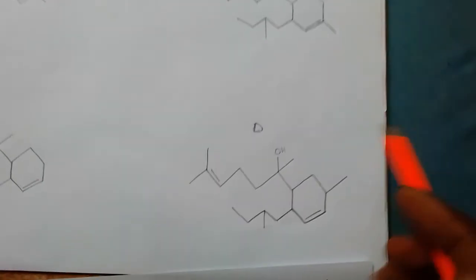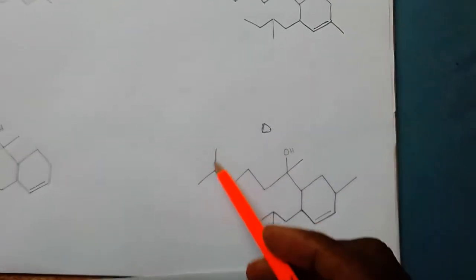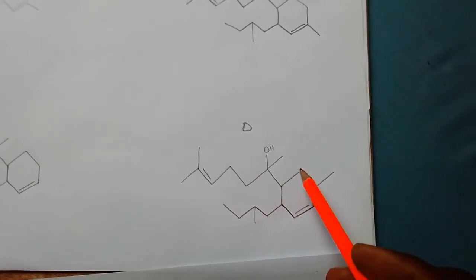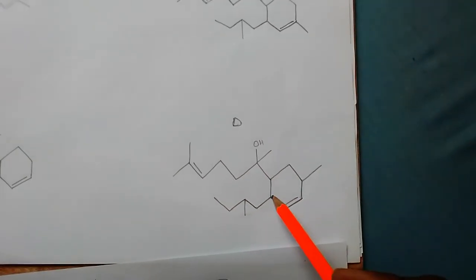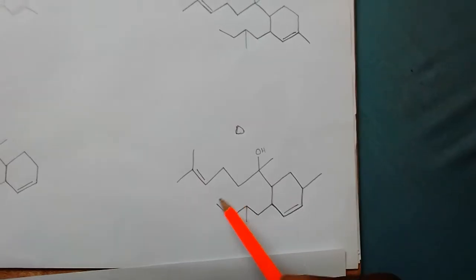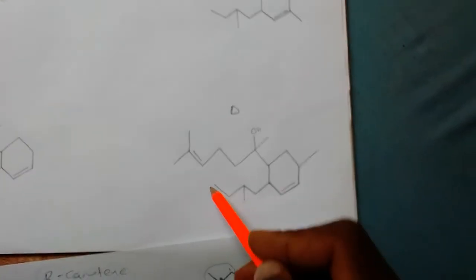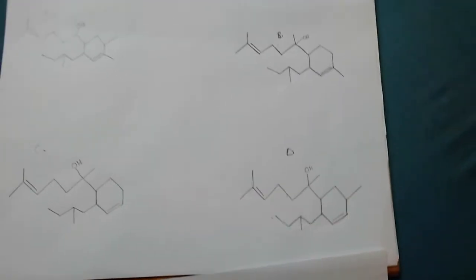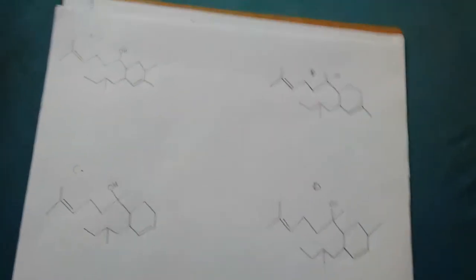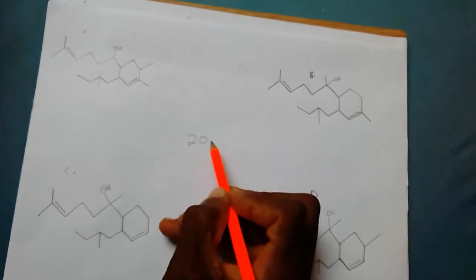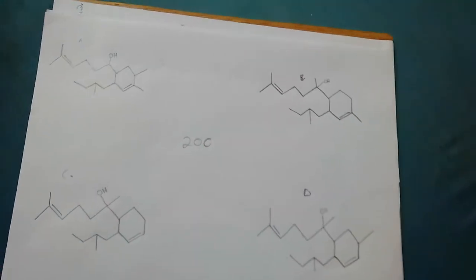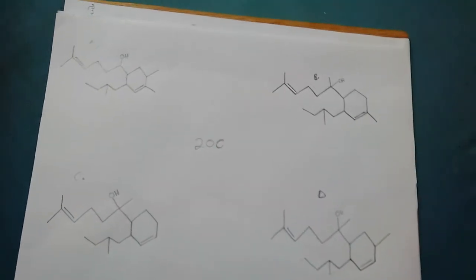Now let's come to compound D: 1, 2, 3, 4, 5, 6, 7, 8, 9, 10, 11, 12, 13, 14, 15, 16, 17, 18, 19, 20. This one too is likely to be a terpene. So we have A, B, and D to check which of them is a terpene, because they all have 20 carbons. But their orientations will determine whether it is a terpene or not.